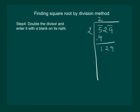Our next step is to double the divisor and enter it with a blank on its right. Our divisor was 2, so let us double it. It will be 2 into 2, which is 4. We enter 4 with the blank on its right.